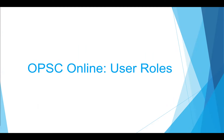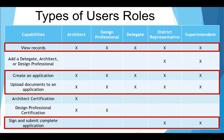Before jumping into the eligibility application submittal process, let's briefly go over the types of user roles in OPSC online and the access granted under them. The tasks we are going over today are outlined in red. Note that anyone can view records, create applications, and upload documents into OPSC online. However, only the district representative/superintendent can electronically submit eligibility applications. In today's presentation, I will be logging into our test environment using the user role of a district representative/superintendent.